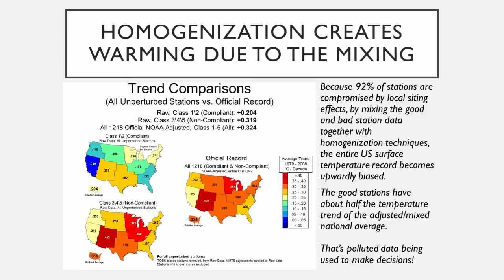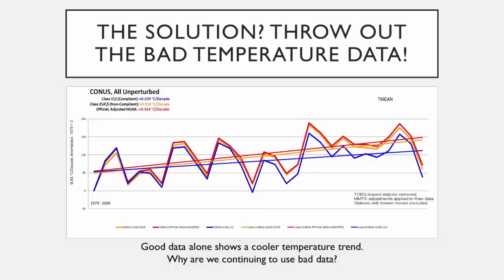When you look at trends of the good stations — the class one stations that have not been compromised — versus the bad stations, class three, four, and fives, the compliant stations have a trend of about two-hundredths per decade, whereas all stations combined show about three-tenths. There's a big difference. The blue represents the best stations, the orange and red represent the worst and all stations together. Clearly the bad data and the good data have been mixed together, resulting in a higher temperature trend.